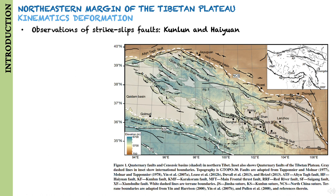Current thinking about the kinematics of deformation interior to northeastern Tibet has been shaped by observations from the intracontinental strike-slip faults that bound this part of the plateau, the Kunlun and the Haiyuan Faults.